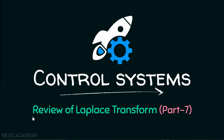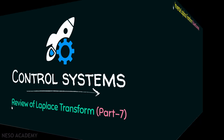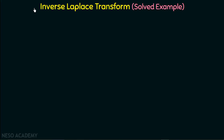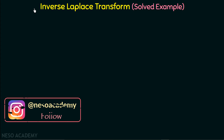In the previous lecture we discussed some examples based on inverse Laplace transform, and in this presentation we are going to have one more example based on inverse Laplace transform. We have discussed Case 1 of partial fractions in which the denominator of f has real and distinct roots, and now we are going to discuss Case 2 of partial fractions in which the denominator of f has real and repeating roots. We will discuss it with the help of one example.